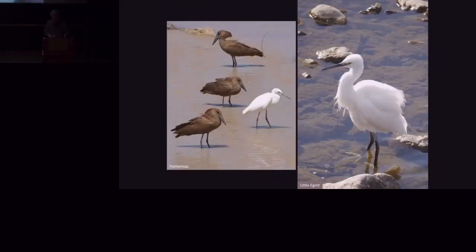The hammerkops on the left there are colored with probably eumelanin, I think. The little egret has no pigment in its feathers. It incoherently scatters all wavelengths of sunlight. So white is a structural color.